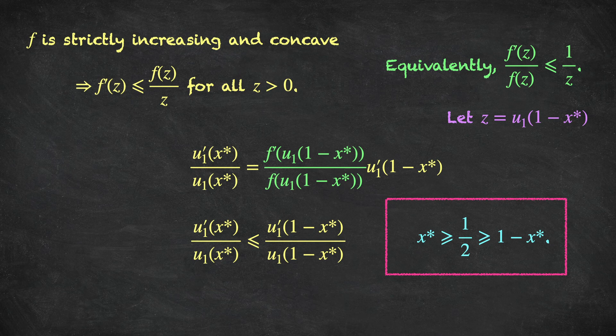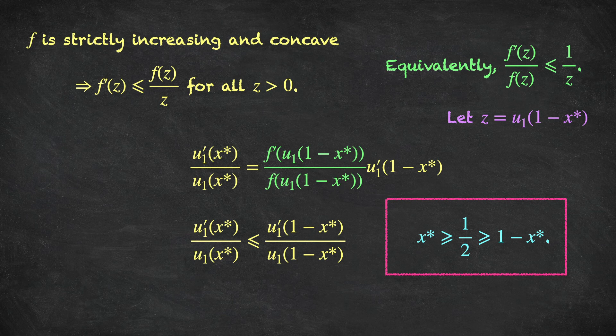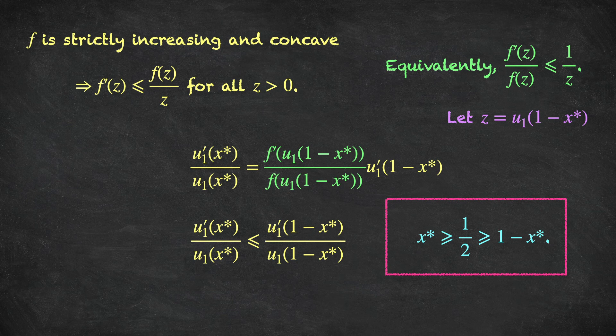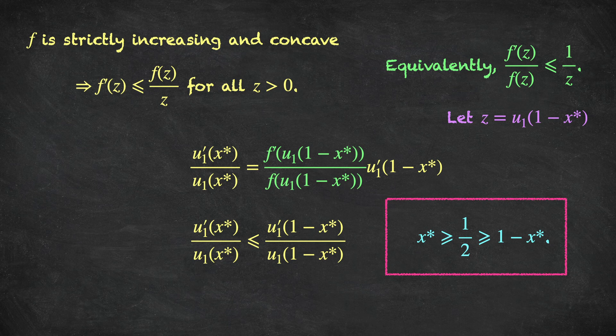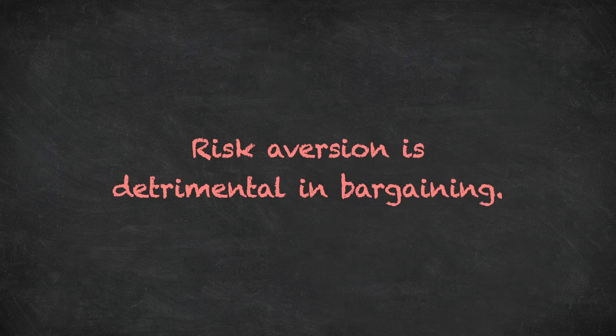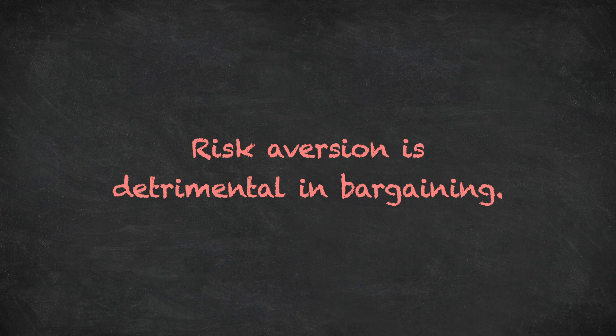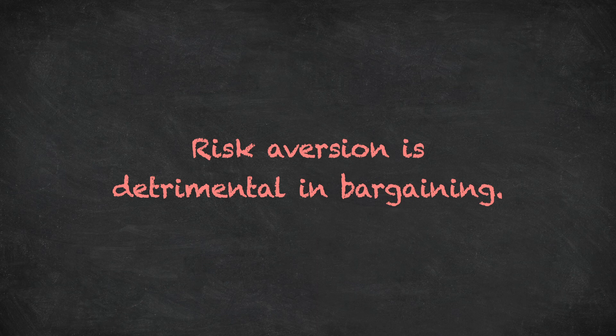So what have we shown here? We've shown that in the divide a dollar game, where players are bargaining over how to share one dollar between them, the player who is less risk averse, player one in our example, is going to get at least half the dollar, possibly more. And the player who is more risk averse is going to do worse. So you can remember this result as the fact that risk aversion in general is detrimental in bargaining. Other things being equal, you would always want to face a more risk averse opponent.